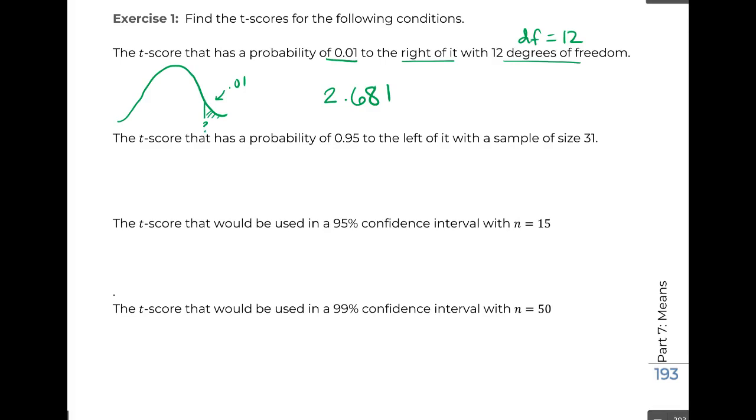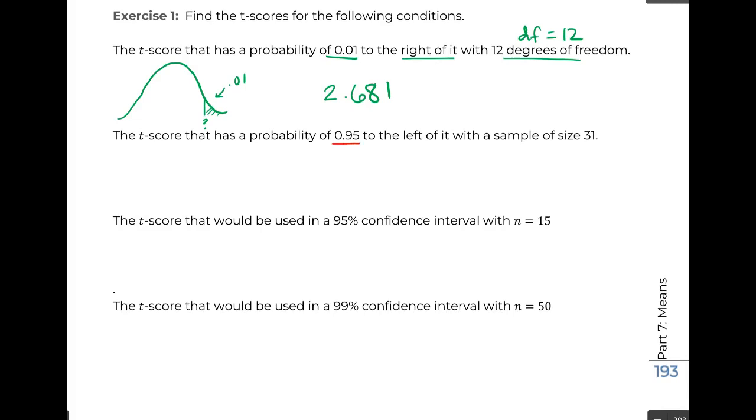Okay, next one says the t-score that has a probability of 0.95 to the left of it. So now we're drawing our curve, still centered at 0, all that good stuff. 0.95 is to the left side. So we're going to come shade most of the curve, probably even further than that. That's left.